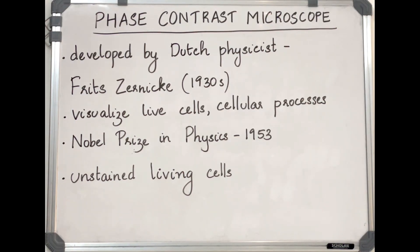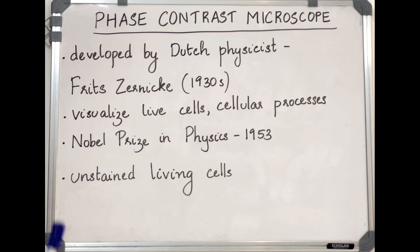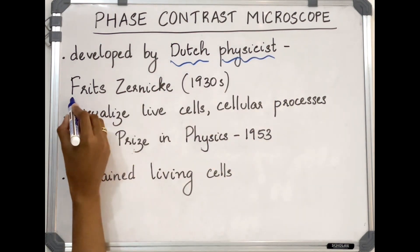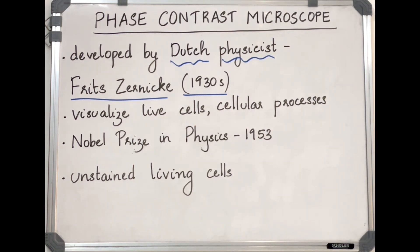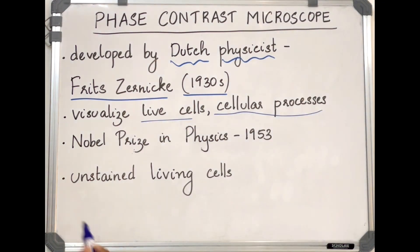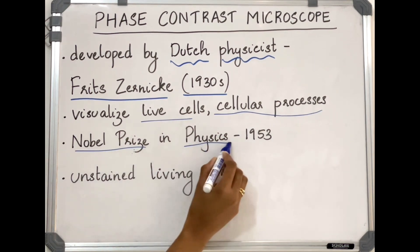Hello everyone, welcome back to the channel Microbial World. Today let us discuss about phase contrast microscope. The phase contrast microscope was developed by Dutch physicist Fritz Zernike in the early 1930s, and the invention of this microscope helped to visualize live cells and cellular processes. Due to this contribution, the inventor was awarded the Nobel Prize in Physics in 1953.